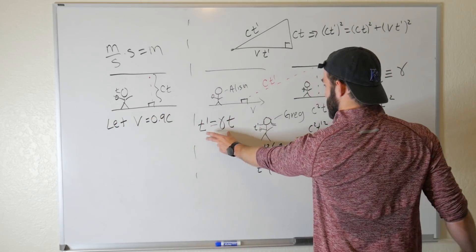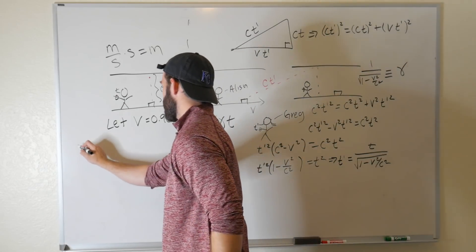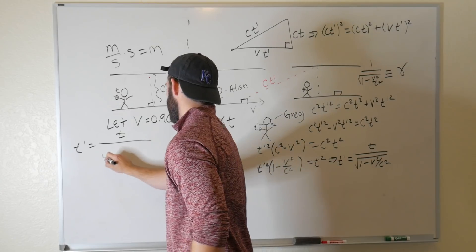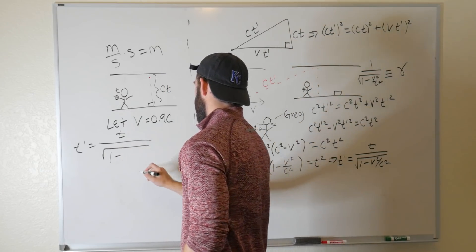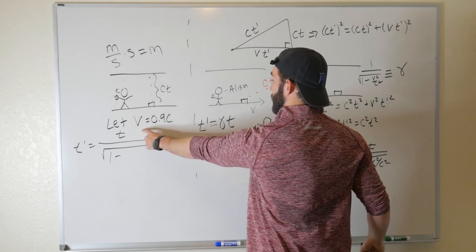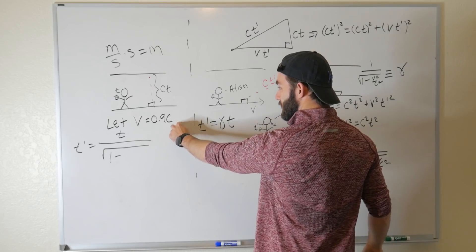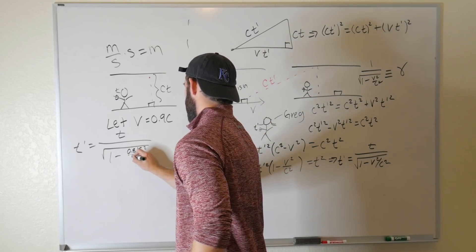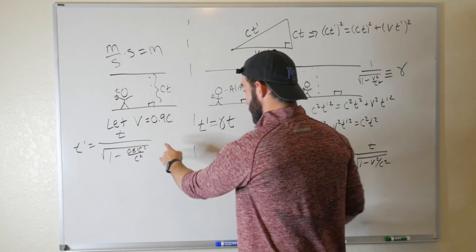let's carry through with this calculation. So this tells us that T prime is equal to T divided by the square root of 1 minus V squared. So it's 0.81C squared divided by C squared. So the C squared is canceled,